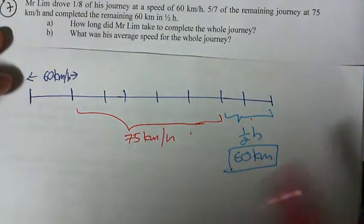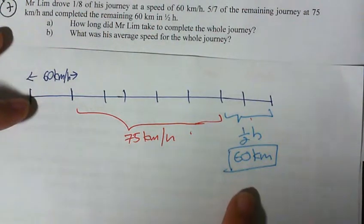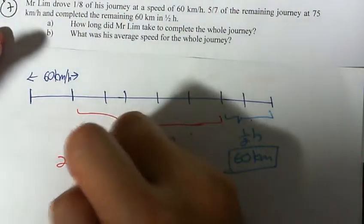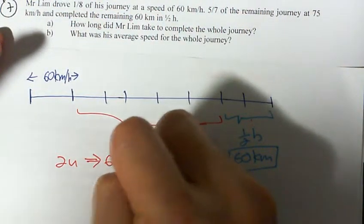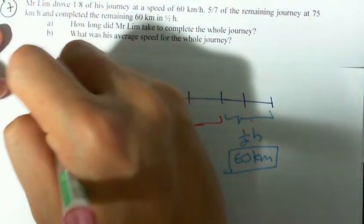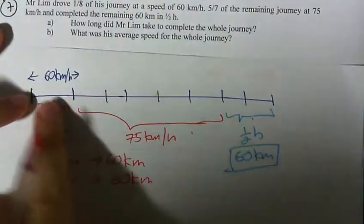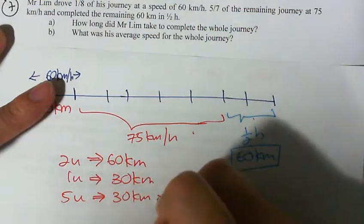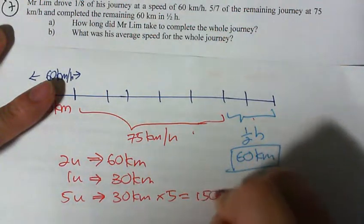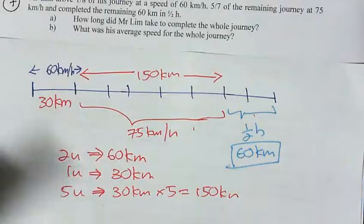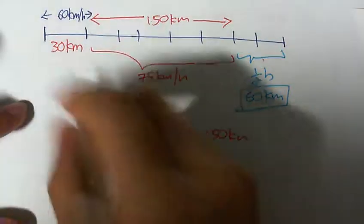Everything becomes very straightforward. Two units equals 60 km, so one unit is 30 km. The first portion is 1 unit = 30 km. The five-sevenths portion is 5 units = 5 times 30 = 150 km. So that whole portion is 150 km.